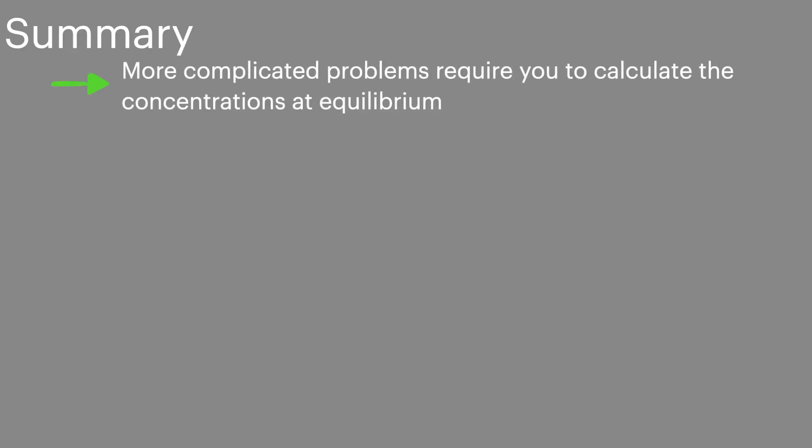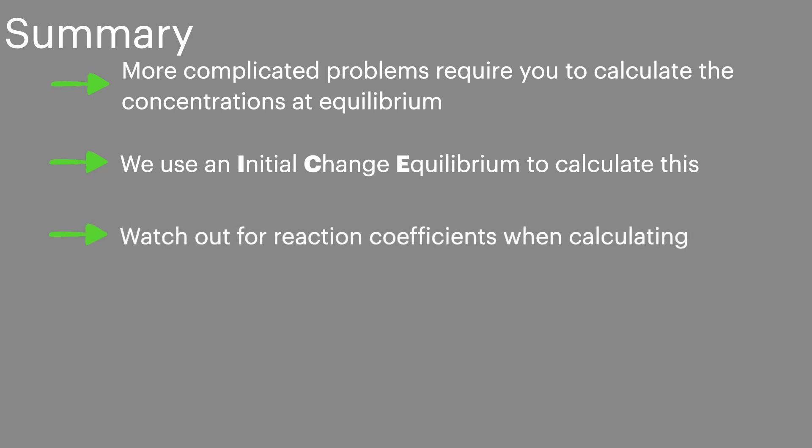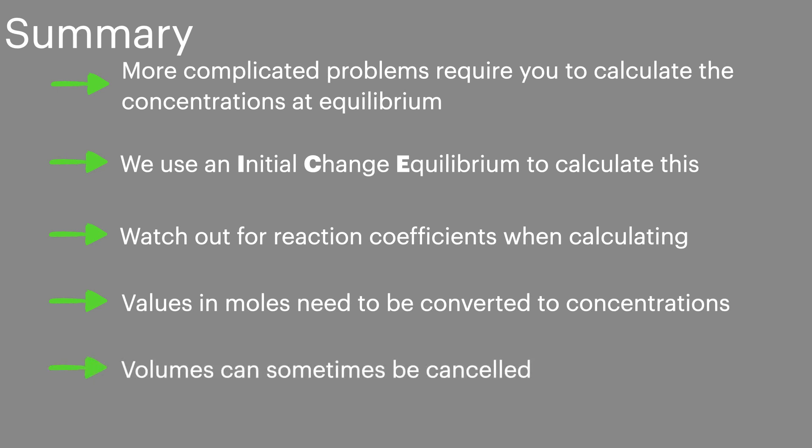In summary then more complicated problems require you to calculate the number of moles present at equilibrium. To do this we can use an ICE table to calculate the amounts. Always watch out for the reaction coefficients when calculating. These are the numbers before each of the chemical equation and give you the ratios. Values in moles will need to be converted to concentrations before you can use them in a Kc expression. And sometimes volumes can be cancelled when there's an equal number of items on the top and the bottom row of the Kc expression.